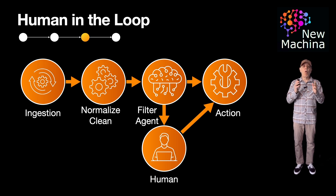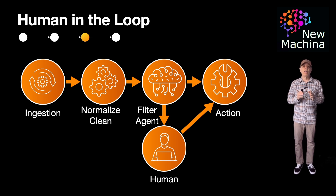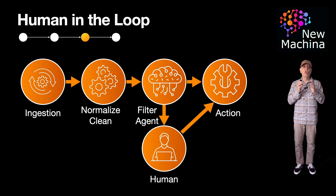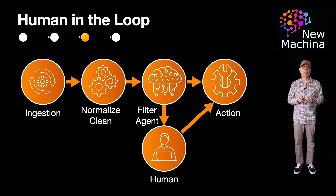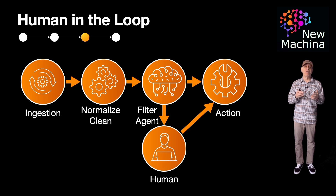Otherwise, content is routed to a human. Content flagged as high risk or uncertain by the filtering agent is prioritized in the human review queue. To increase throughput, the system can incorporate load balancing to help distribute tasks efficiently among available human reviewers. As humans review the content in their queues, they execute actions such as publishing, deleting, sending warnings, or escalating to a legal team.